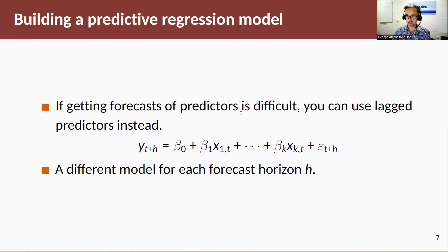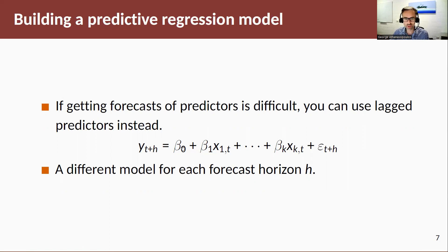If we don't want to deal with future values of our predictors, an alternative is to build what we call a predictive regression model. In this model, the predictors are lagged values of the predictor variables. So if I'm interested in forecasting H steps ahead, I can use H-step lags of the predictor variable. When I roll this model forward for Y_{T+H} for out-of-sample forecasting, everything on the right-hand side is observed. You can actually build a different model for each forecast horizon you want to consider.